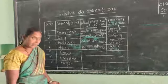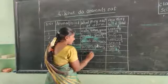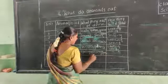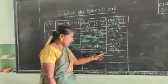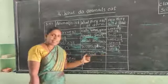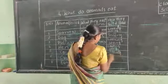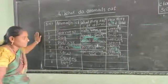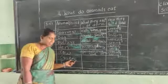Next is the cow. Cow gives us milk. What does the cow eat? It eats green grass, dry grass, and plants. How does it find its food? By looking and seeing.